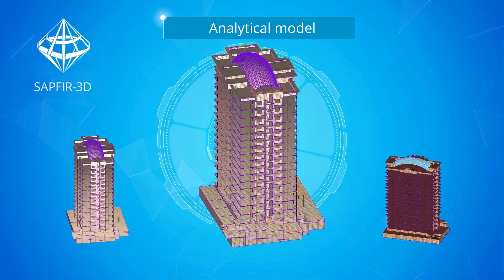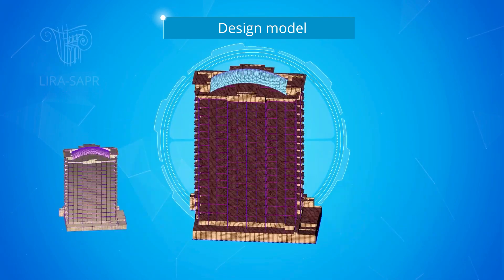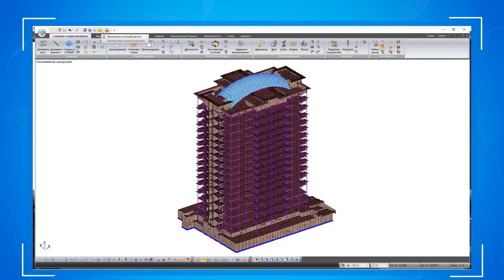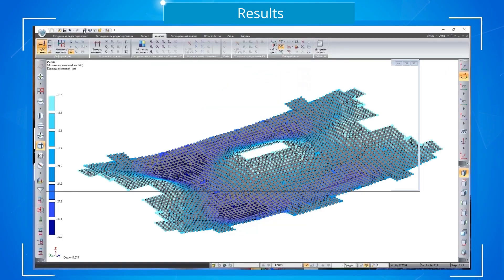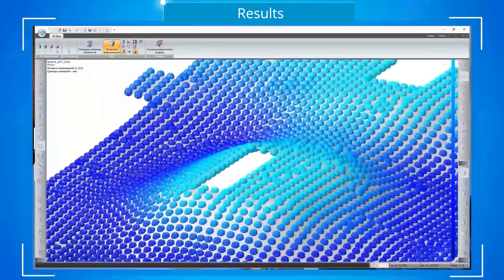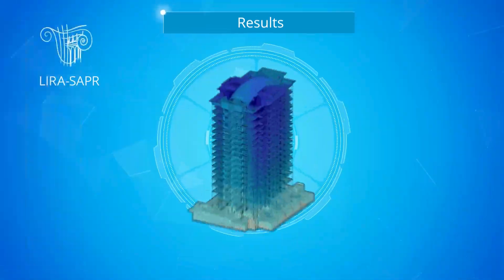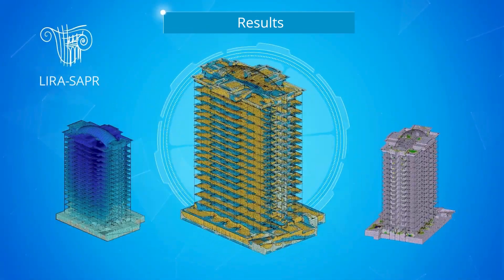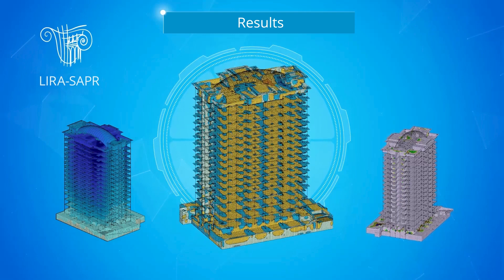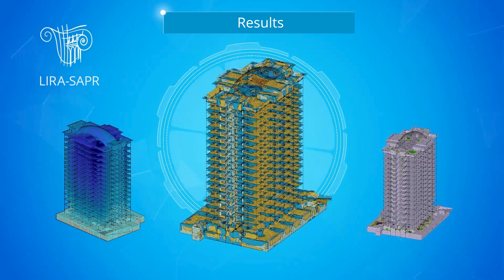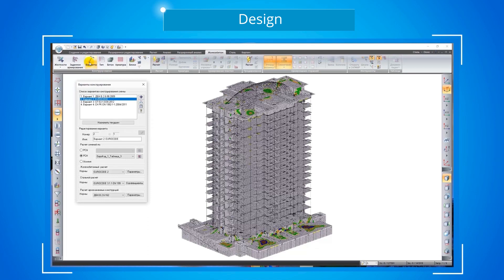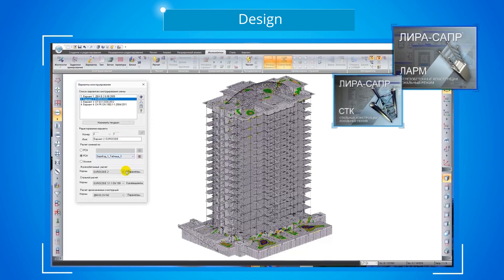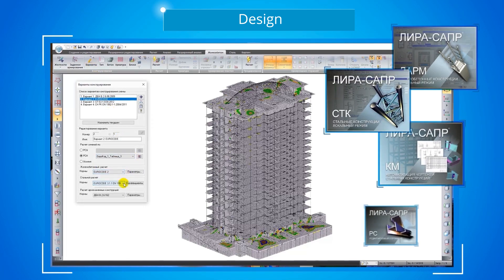In our program, it is very simple to obtain a design model for the structure from its information model. This makes it possible to carry out the stress-strain analysis for different structures. The multivariant strength analysis of the design model ensures the reliability and safety of the building's maintenance, so the engineer can make rational and reasonable design decisions.